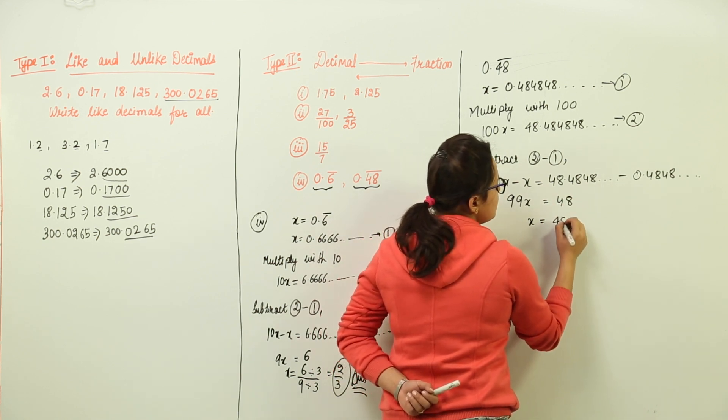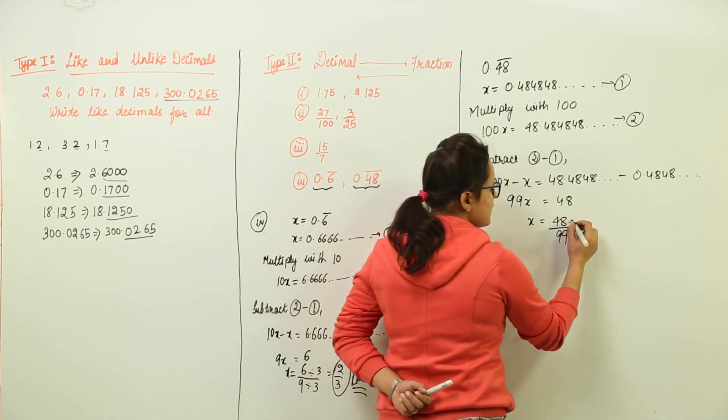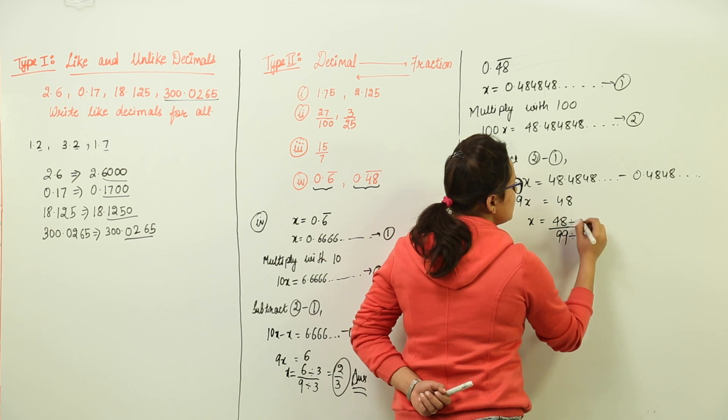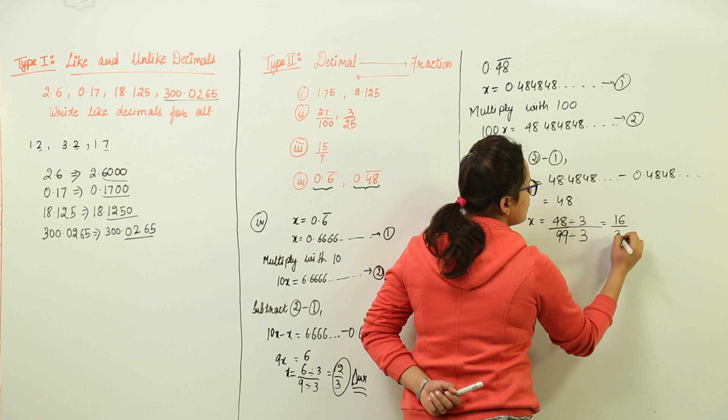Now x comes out to be 48 upon 99. If possible, you can solve it further. Yes, we do have the factors common that is 3. So on solving, we get 16 upon 33.